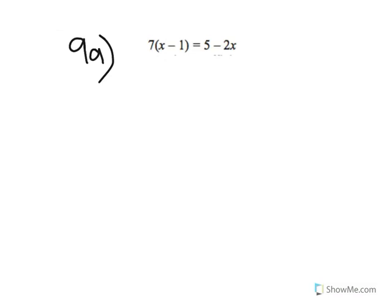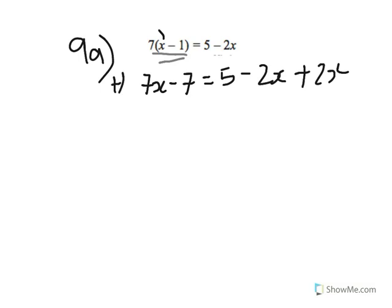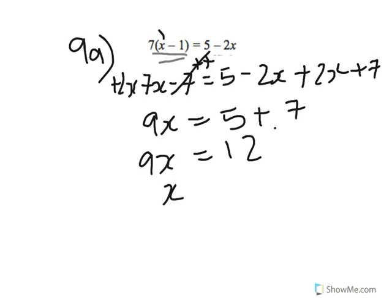Okay, question 9a asks you to solve an equation showing sufficient working. Multiply out the brackets first: 7 times x gives 7x, and 7 times negative 1 gives minus 7, so 7x minus 7 equals 5 minus 2x. Add 2x to both sides to get 9x, and add 7 to both sides so 9x equals 12. Divide both sides by 9: x equals 12/9, which simplifies by dividing by 3 to give x equals 4/3.